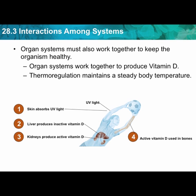Then the kidneys take that inactive vitamin D and convert it to active vitamin D. In the bone marrow, the active vitamin D is used to strengthen the bones. If you run a lot or do something repetitively, anything you do causes stress on the bones, and that stress will cause a slight thickening of the bone if it gets used over and over.